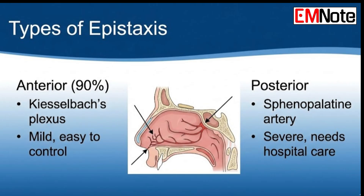Now for the severe 10% — the posterior bleeds. The posterior source is much, much deeper — coming from the back and top parts of the nasal cavity. The main culprit is almost always the sphenopalatine artery, a terminal branch of the maxillary artery. We're talking about a large-caliber vessel with high-pressure flow. When that ruptures, the bleeding is heavy, it's fast, and it does not respond to simple first aid.